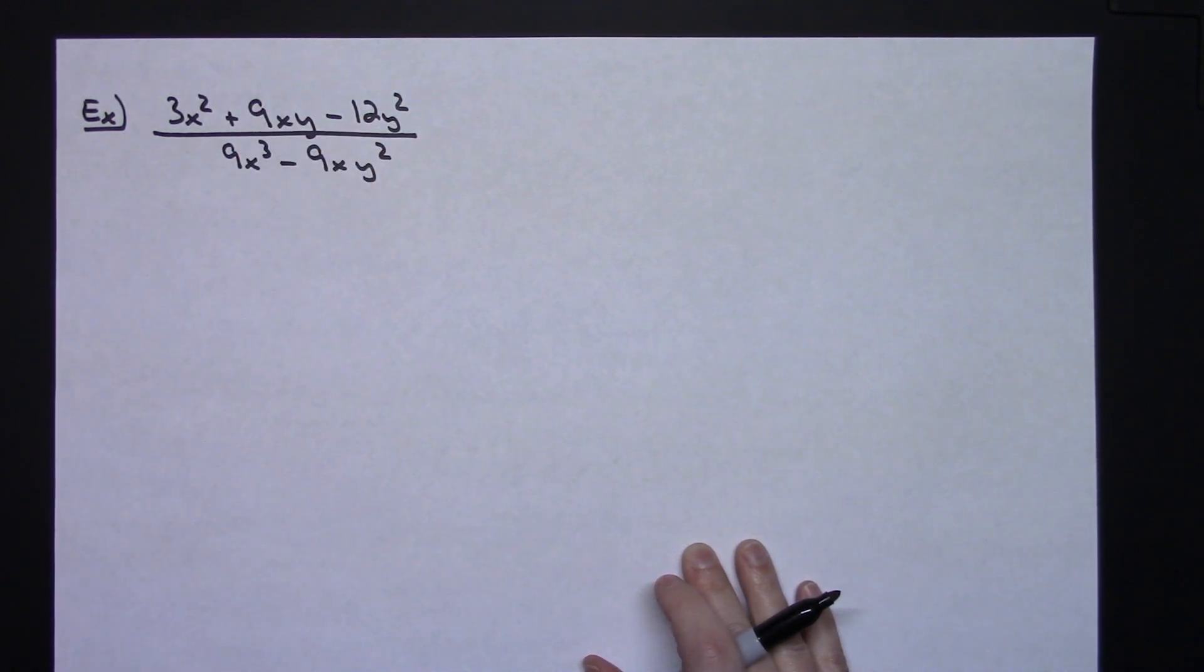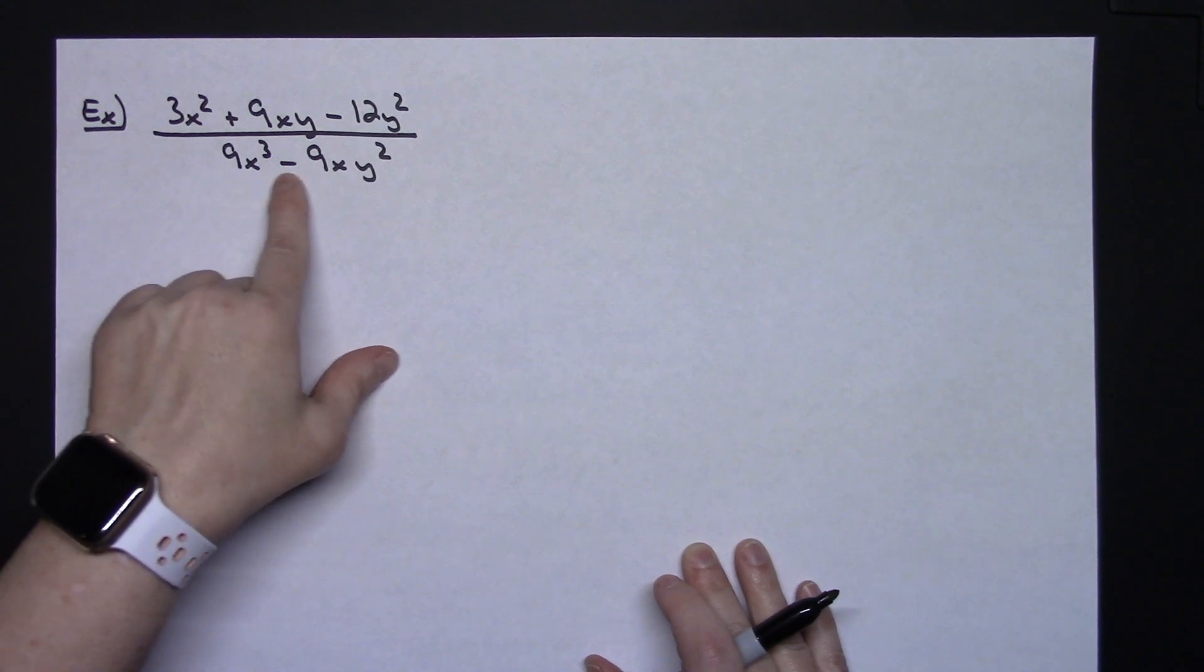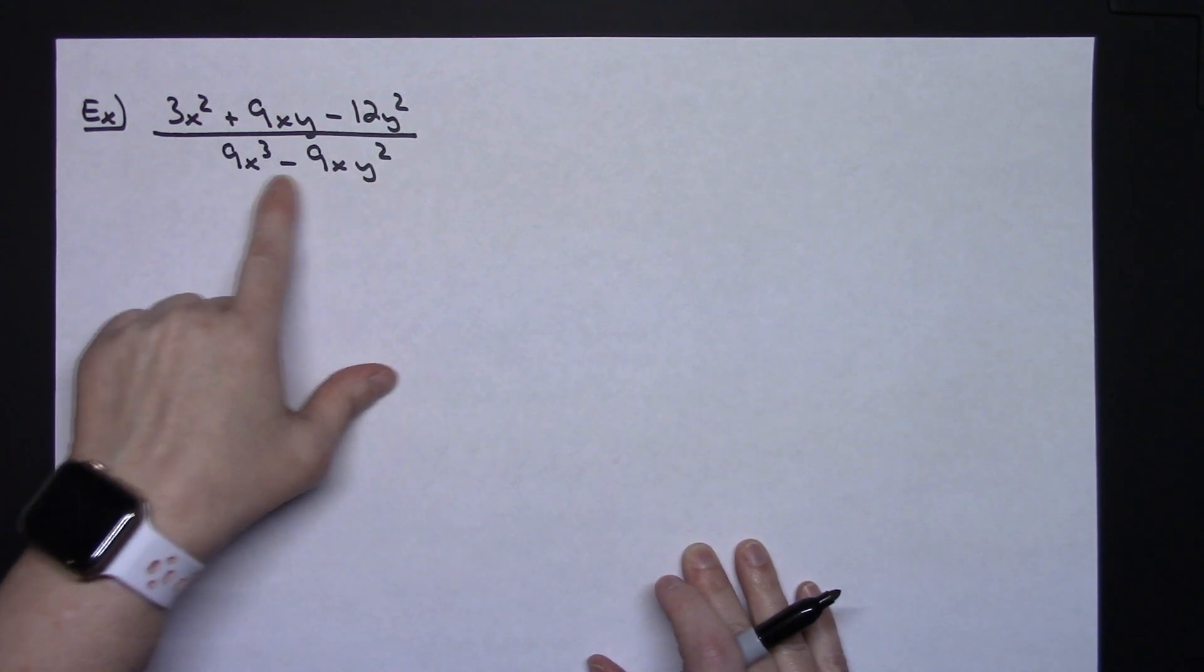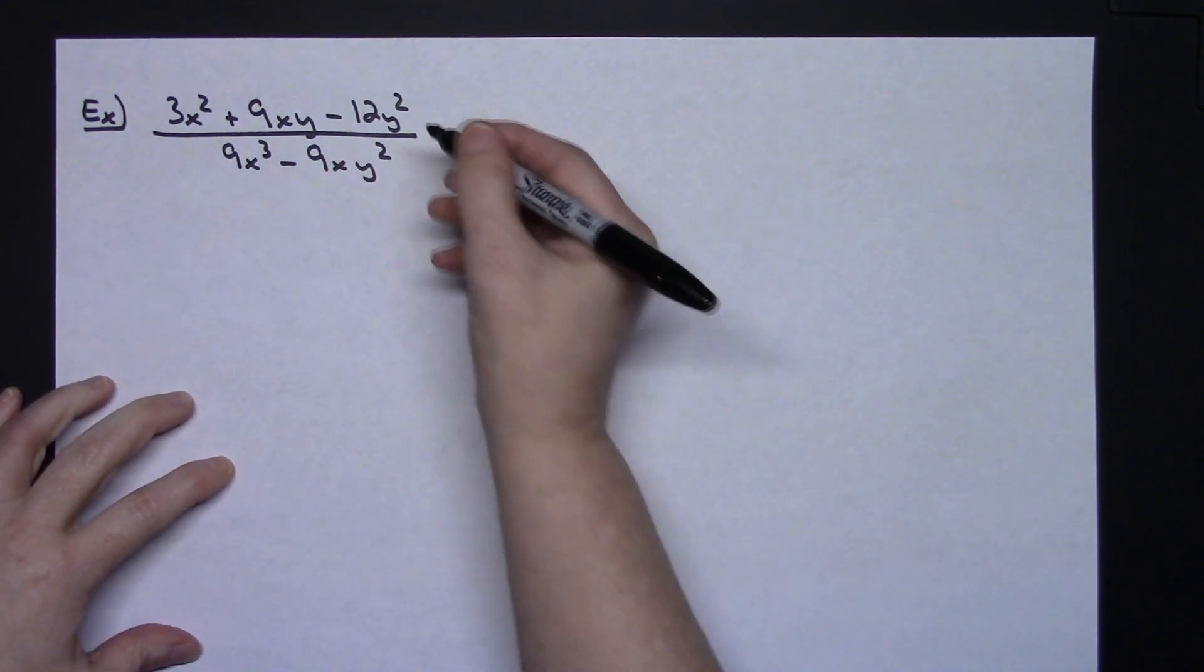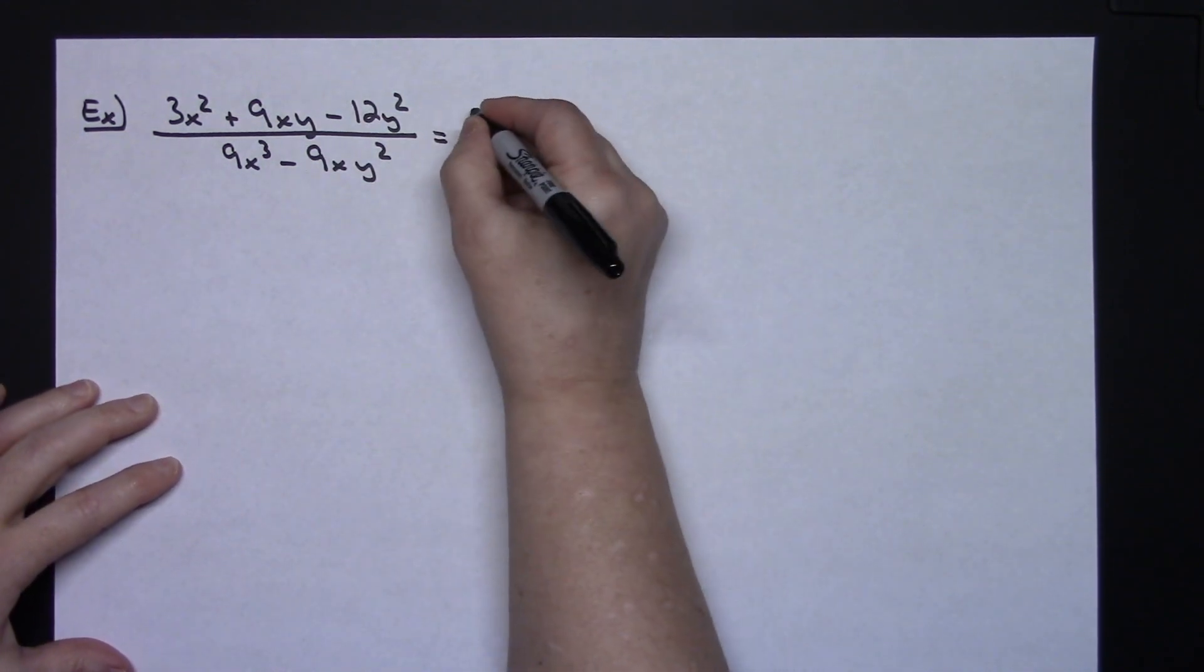Looking very closely here at the bottom I can take a 9 out and I can also take out an x. So I am going to take out that greatest common factor on both of these.